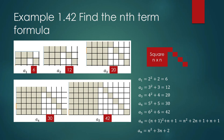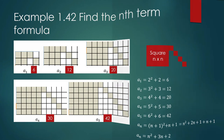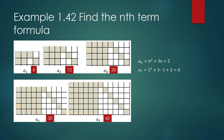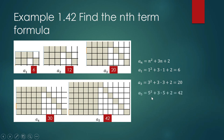Going back to our original plan, we test if the formula can replicate the initial terms of our sequence. For the first term: 1² + 3(1) + 2 = 6. That agrees with the first term. For the third term: 3² + 3(3) + 2 = 9 + 9 + 2 = 20. That agrees. For the fifth term: 5² + 3(5) + 2 = 25 + 15 + 2 = 42. Our formula replicates all the given terms, so this is the general formula for the nth term of this sequence.